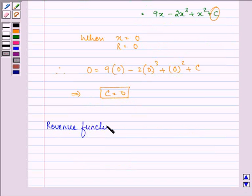So we can write the revenue function as R(x) = 9x - 2x³ + x². This is our total revenue function, and we need to find the demand function as well.